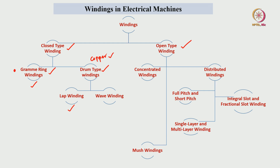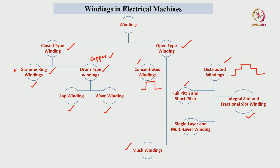Drum type windings are classified into lap winding and wave winding. The only difference is how we are connecting the commutators and brush arrangement with respect to these two windings. Open type windings are classified into three types: concentrated, distributed, and mush type windings. In concentrated windings, all windings are placed at one particular place and generate a square type of MMF. In distributed windings, conductors are distributed over n number of slots, producing a stepped or smoother MMF waveform. Distributed windings are further classified into full pitch and short pitch, integral slot and fractional slot, and single layer and multilayer windings.